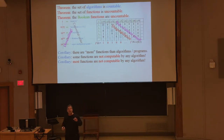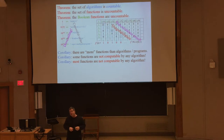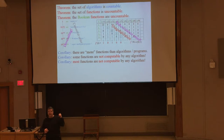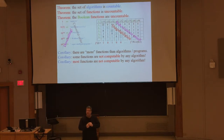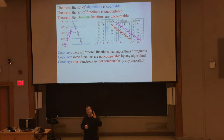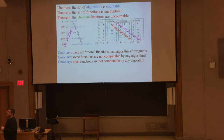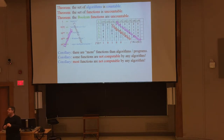Functions in code are not the same kind of beasts as mathematical functions — mathematical functions are more general. The halting function — the function of whether a piece of code halts or doesn't halt on a given input — that's undecidable, that's not computable. There's no algorithm, and we're about to prove that in a couple of slides. It's an amazing proof.